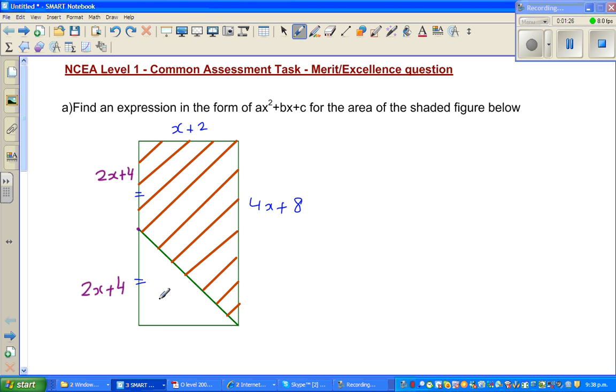Now to find the area of this rectangle is area of this whole rectangle minus this unshaded part. This is a right angle triangle.